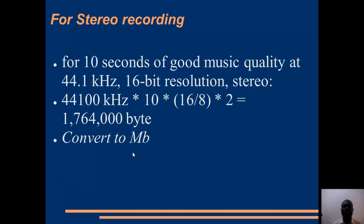For a stereo recording of the same sound — 10 seconds of good music quality at 44.1 kHz, 16-bit resolution, stereo: 44,100 × 10 × (16/8) × 2 = 1,764,000 bytes. You can convert this to megabytes by dividing by 1024 × 1024.